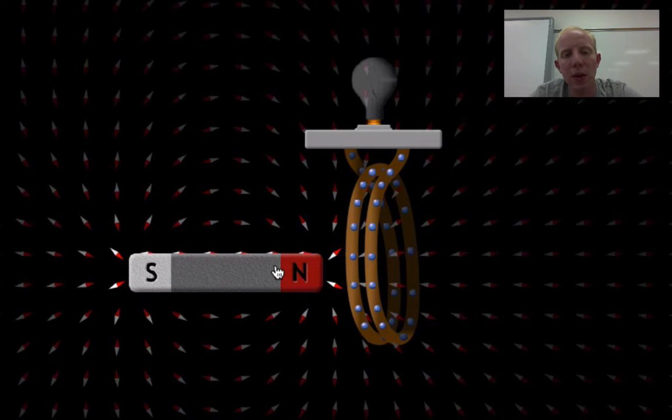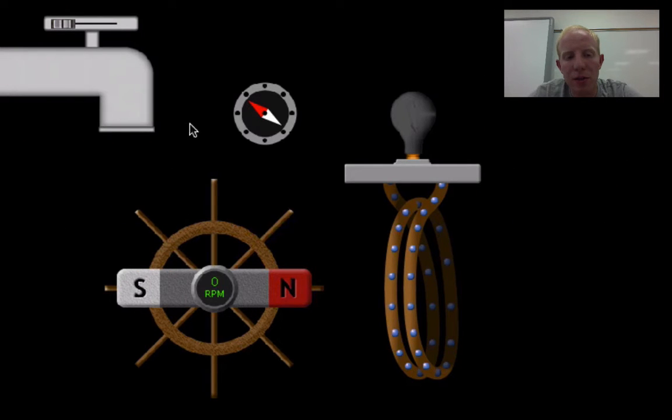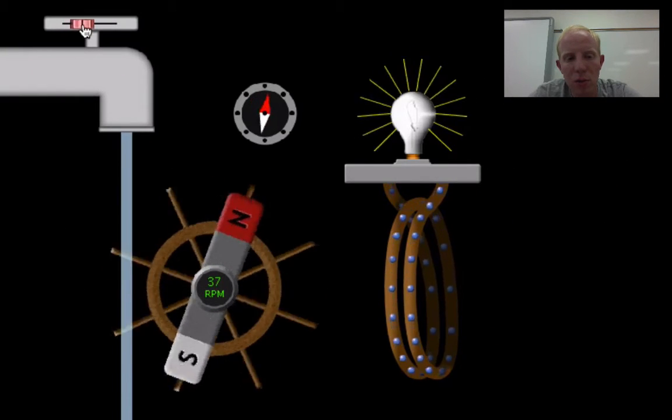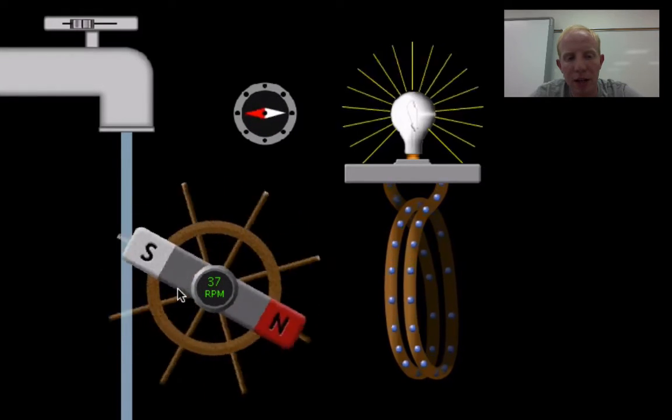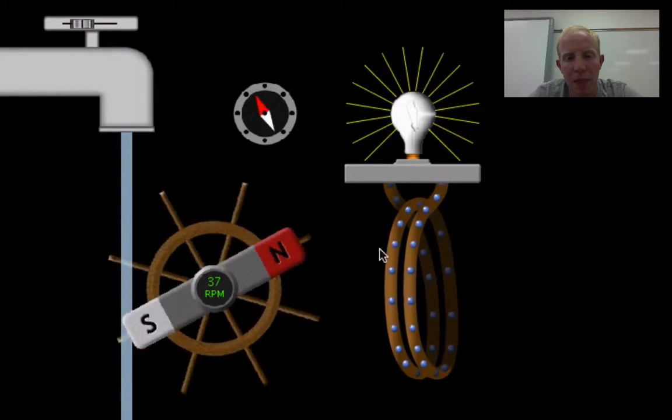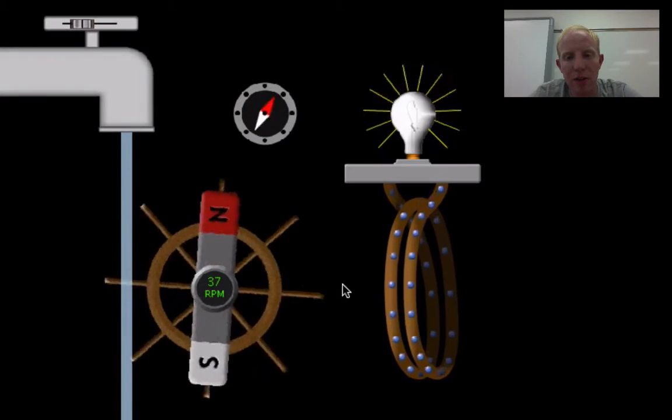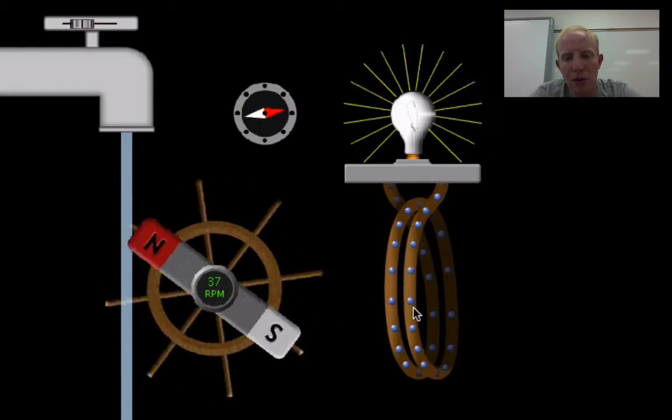If you can get a consistent way to change that magnetic field, then you can keep the light bulb on indefinitely. One way to do that is to have water move that magnet. And we can see as the magnet is rotated, it causes a changing magnetic field and that causes the light bulb to turn on.